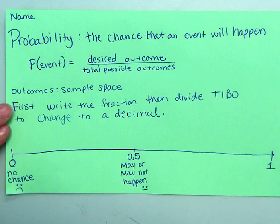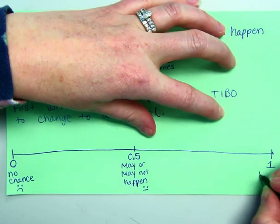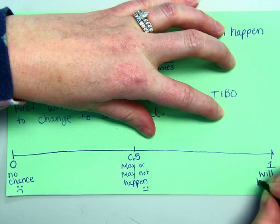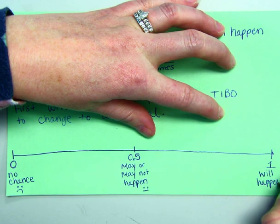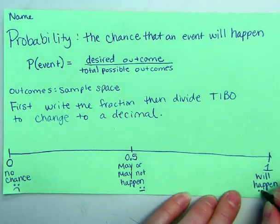Now if it's a 1, it absolutely will happen. The probability is very good. So it will happen. So that is a happy face.